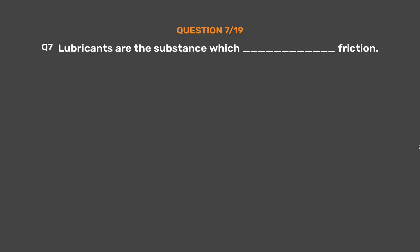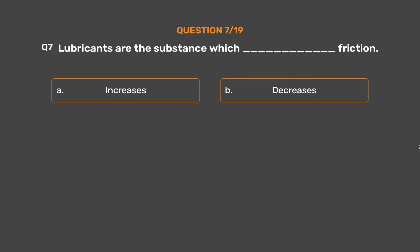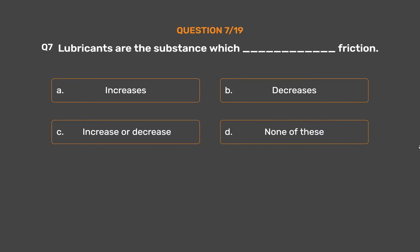Question number 7. Lubricants are substances which blank friction. Option A: Increases. Option B: Decreases. Option C: Increase or decrease. Option D: None of these.